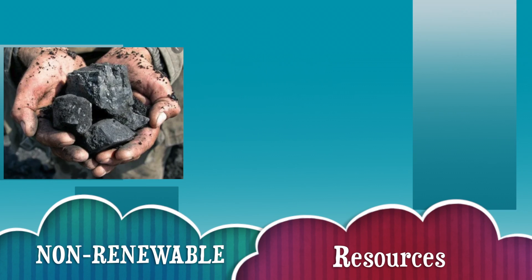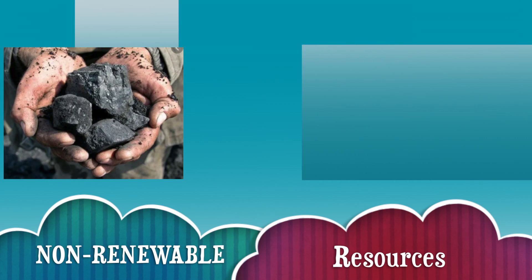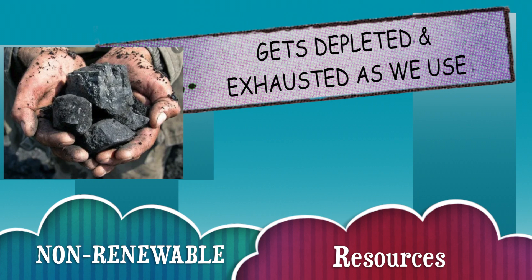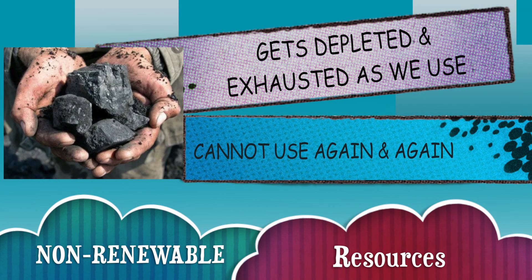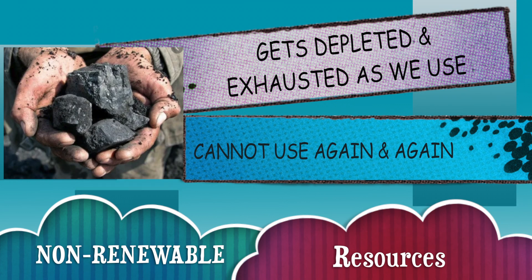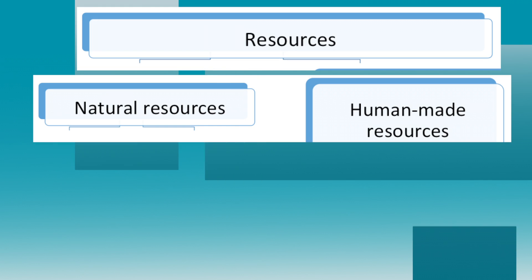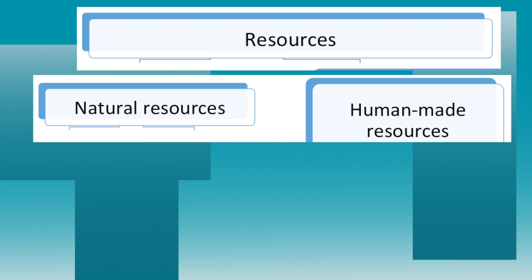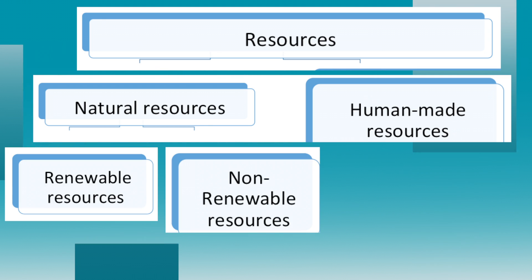Next, we are going to look at non-renewable resources. Coal is an example of non-renewable resources because as we use it, coal will get depleted, it will get exhausted, and we cannot reuse coal again and again. Non-renewable resources are those resources which we cannot use again and again and which will get depleted. Now you know that natural resources are of two categories: renewable resources and non-renewable resources.